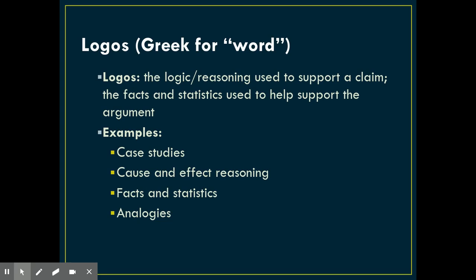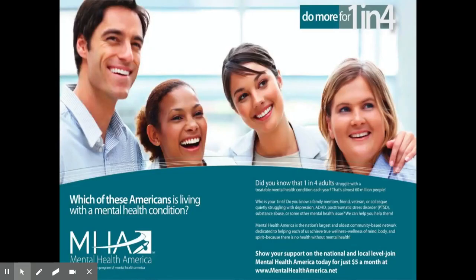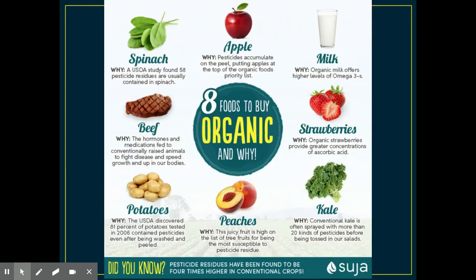So let's look at some examples in advertising for logos. First off, we've got Cheerios — Cheerios trying to get you to buy their product by using the logic that you can lower your cholesterol by 4% in 6 weeks. This is a measurable statistic with an actual percentage and a time frame, something that can be measured, appealing to the audience's sense of logic and reasoning. Another advertisement brings up the statistic that 1 in 4 adults struggle with a treatable mental health condition — by bringing up this statistic, they make it impossible for the audience to argue that a problem doesn't exist. A third advertisement tries to convince you to buy organic instead of regular grocery store produce by bringing up statistics and facts about the different types of pesticides used and the different ways these foods are altered before reaching the grocery store.